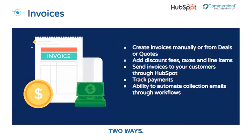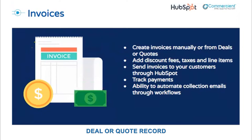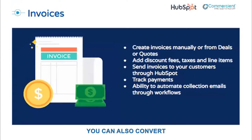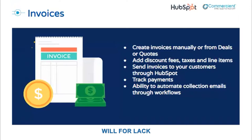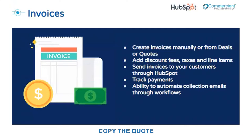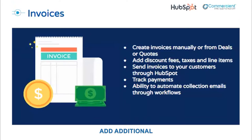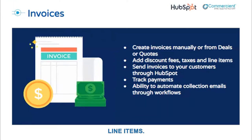You can manually create an invoice from the contact, company, deal, or quote record, or from the invoices index page. You can also convert a published quote into an invoice. Converting a published quote will, for lack of a better word, copy the quote details into the invoice. You have quite a few options when creating an invoice. You can edit the invoice date and terms, add additional line items either from the product library or as custom line items.